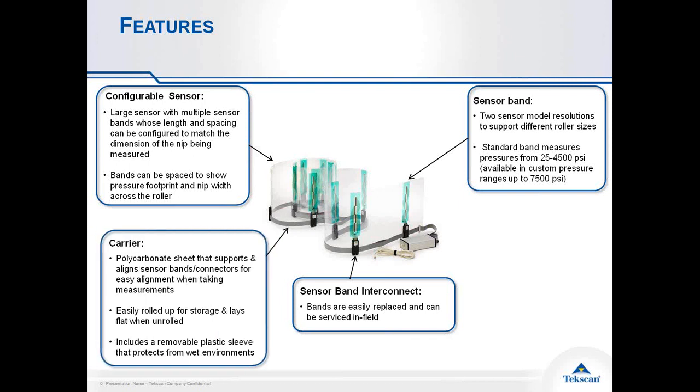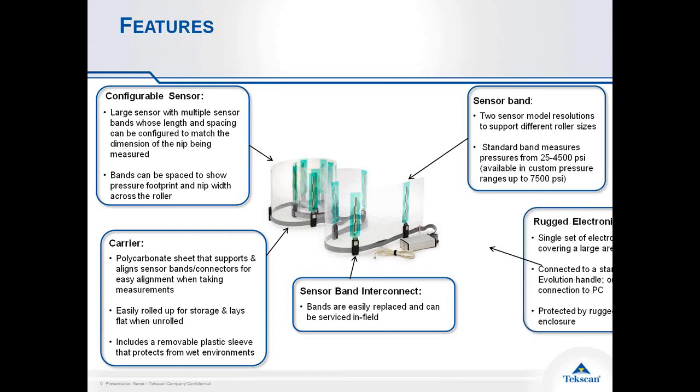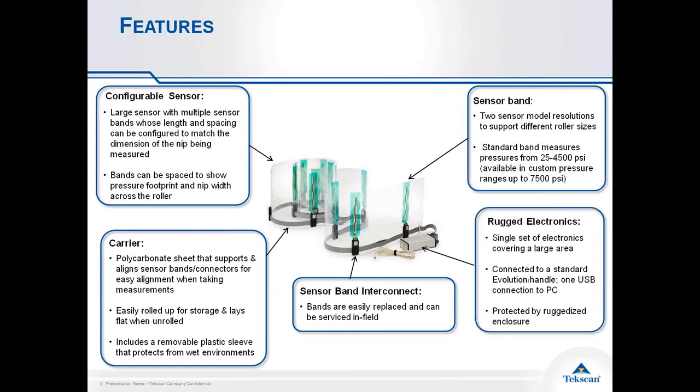The carrier sheet that holds all these sensing bands is a polycarbonate sheet, which makes it easy for two operators to feed the system in between rollers even on rolls as long as 10 meters long. It also rolls up cleanly, can be stored in a case that comes with the system, and the polycarbonate sheet doesn't remember being in the rolled position, so every time you unroll it, it rolls out flat and ready to use.